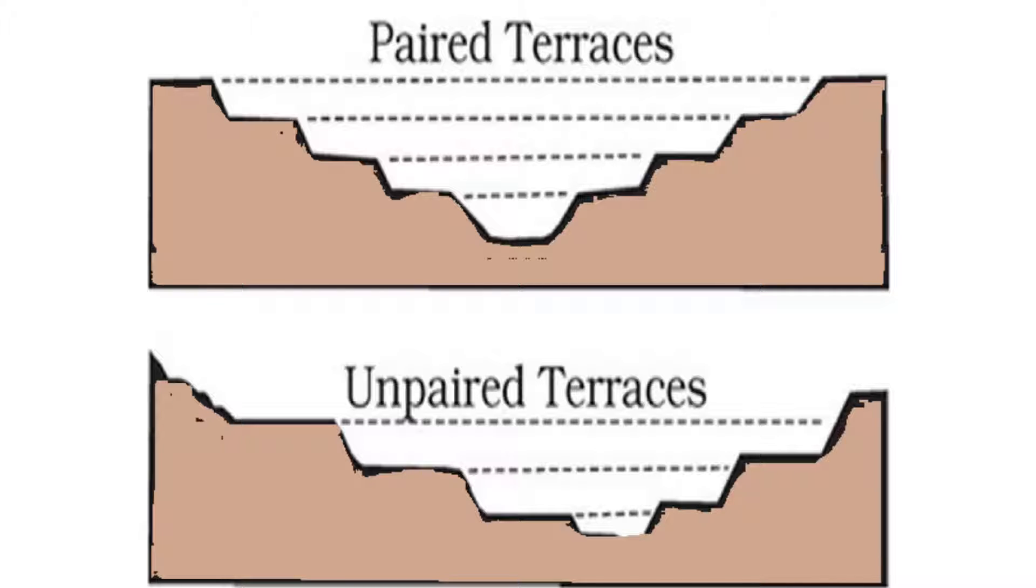River terraces, just like incised meanders, are of two types. So we can talk about paired river terraces and unpaired river terraces. Paired terraces form when vertical erosion is rapid. And unpaired terraces form when vertical erosion occurs more slowly.